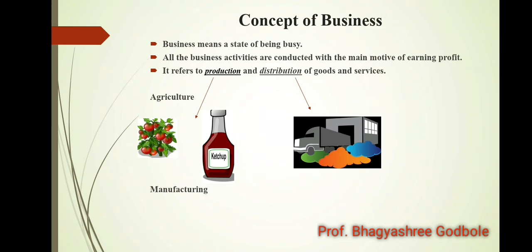The next part is distribution. The main purpose of producing goods is to sell them to the consumer, so distribution comes into the picture. It includes all those activities or services which we undertake to make goods or products available to the final consumer — for example, transportation of goods, warehousing (that is, storing goods in good condition until they are demanded in the market), and advertising those goods so that people can know about and purchase them.